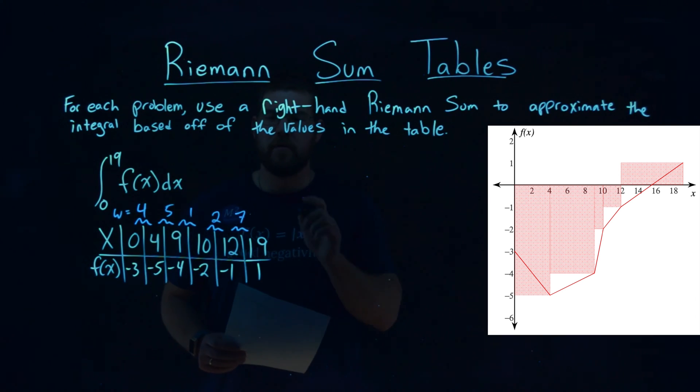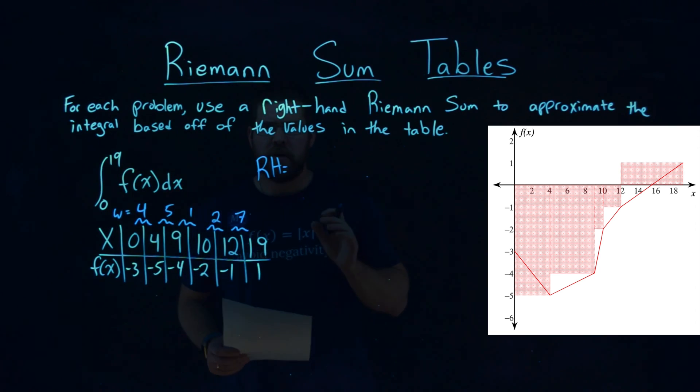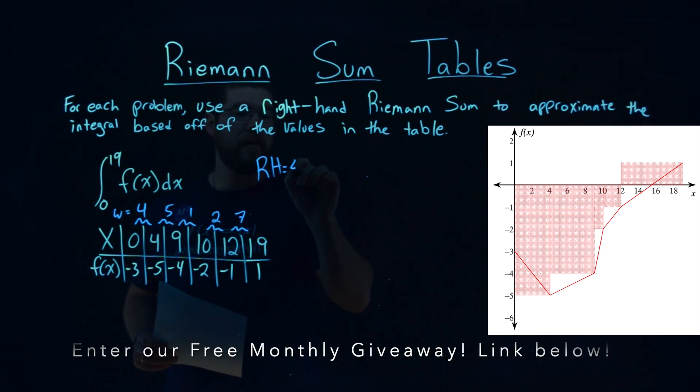Now again, they told us that this is a right-hand Riemann-Sum. So to find the area of each rectangle, we take its corresponding width, so the first case we have a 4,